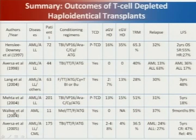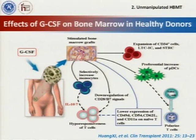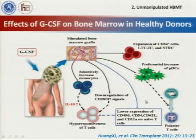The disease-free survival was not very satisfactory. Other doctors, such as Dr. Warren, used a similar protocol but were not as successful as Dr. Aversa — only 9% of patients achieved disease-free survival. In our hospital in Peking, at a very early stage we also tried the Perugia protocol, but almost all patients either failed to engraft or died of relapse or infection. So we tried to develop another program.